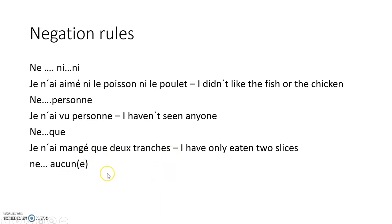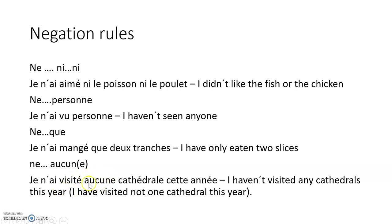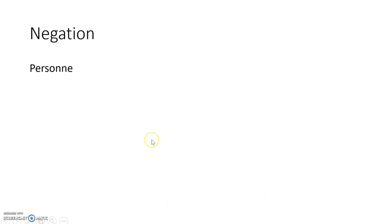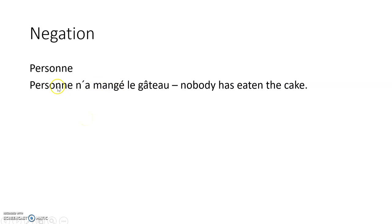Ne...aucun/aucune — the particle goes after the past participle. Je n'ai visité aucune cathédrale cette année — 'I haven't visited any cathedrals this year.' There are also ones where we place them at the beginning. Personne, meaning 'nobody': personne n'a mangé le gâteau — we have personne at the beginning, then ne with apostrophe, then the auxiliary, then the past participle, then the object. And with être: personne n'est allé au château.